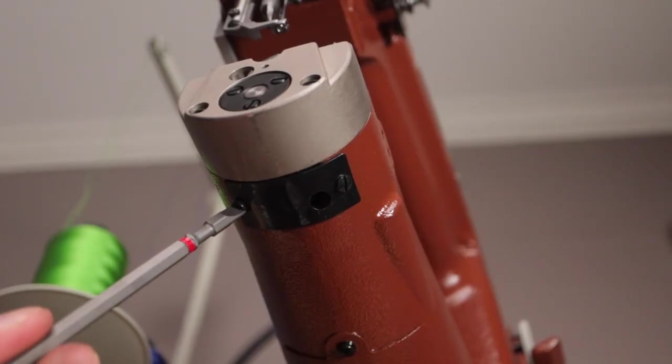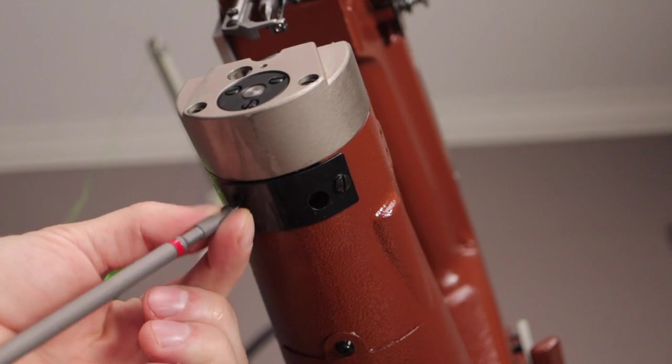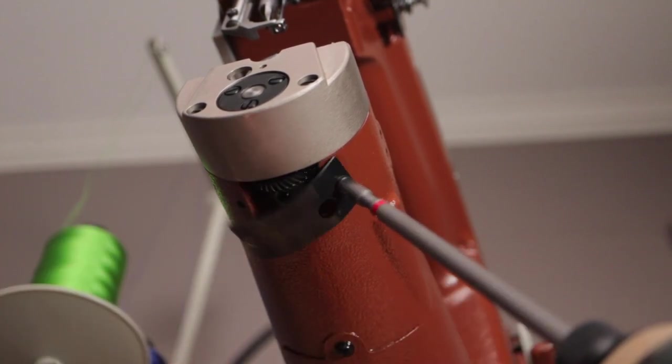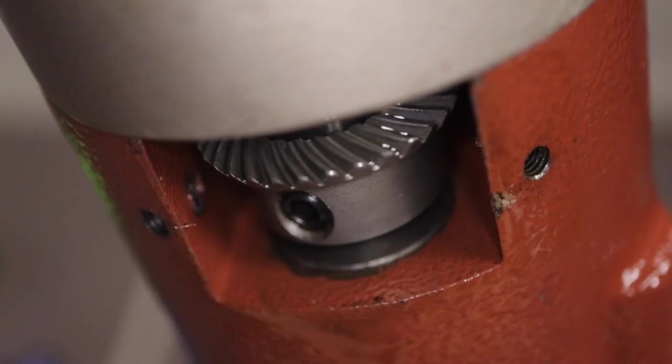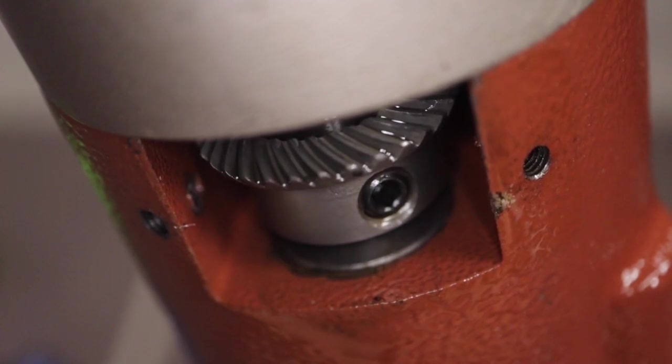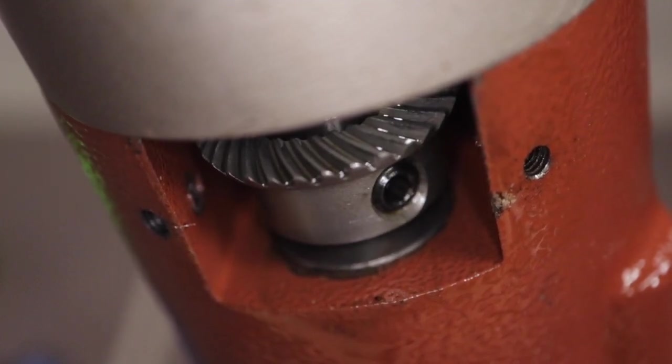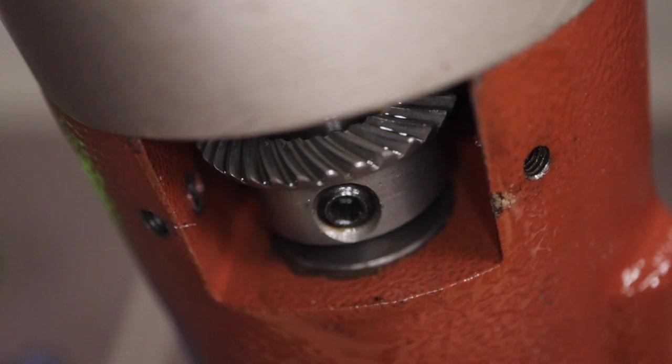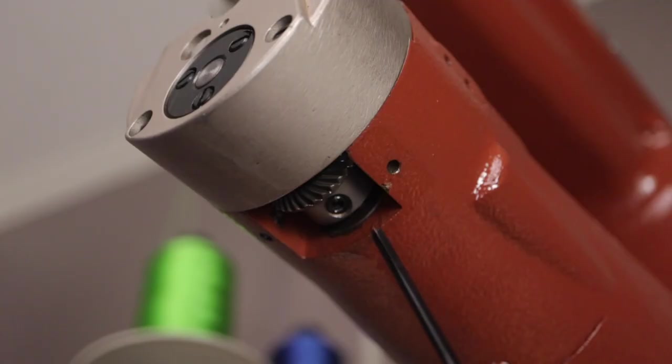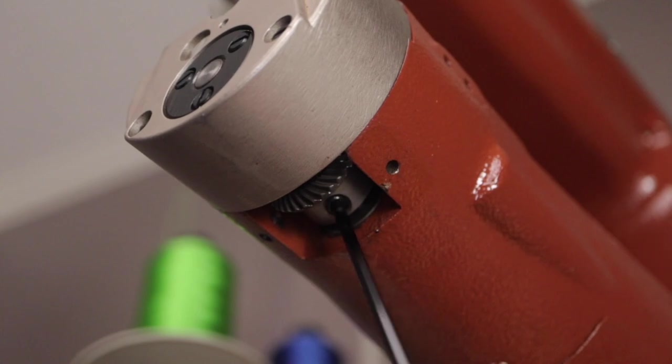To begin, remove the two bottom screws and the cover plate from under the throat of the machine. As you turn the hand wheel you will see three allen wrench screws that need to be loosened. These allen screws are extremely tight so you have to put some muscle into it.